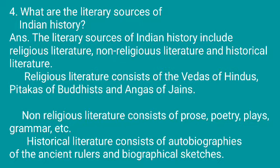The second type is non-religious literature, which is not related to religion and consists of prose, poetry, plays, grammar, etc. The third type is historical literature, which consists of autobiographies and biographies of ancient rulers.